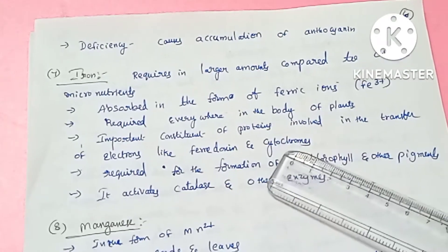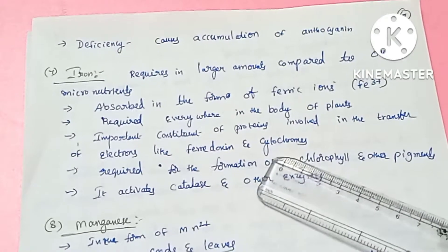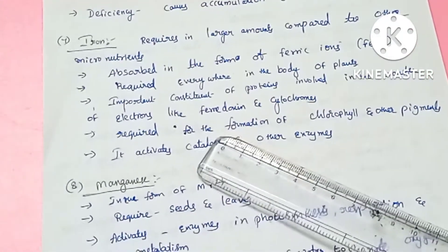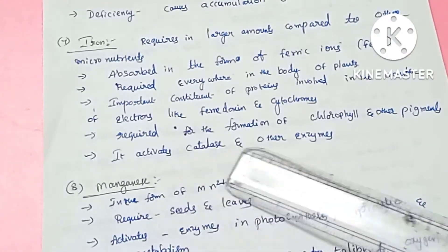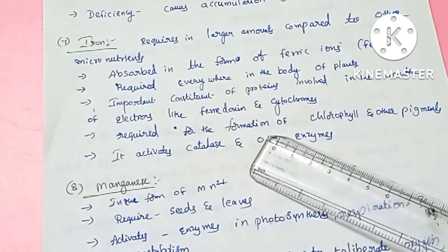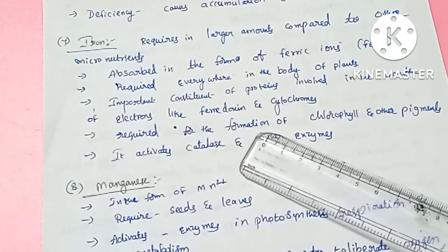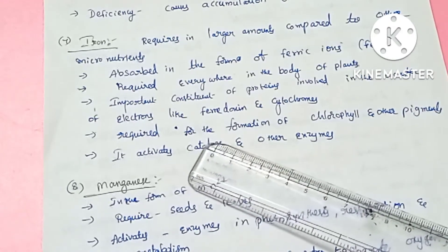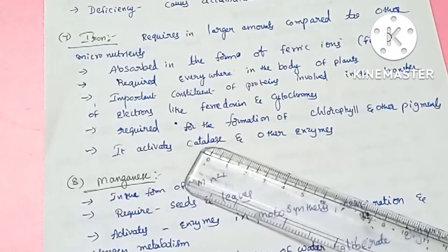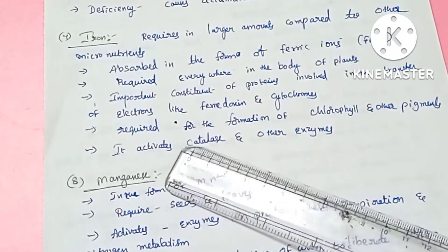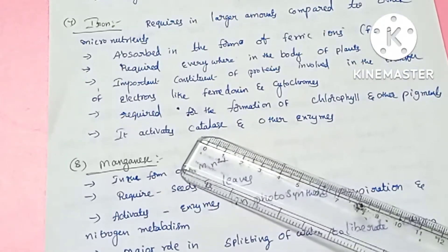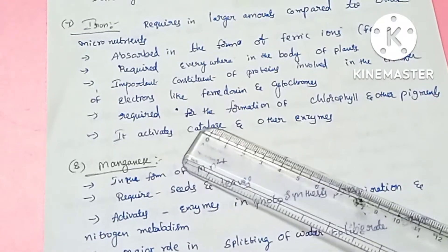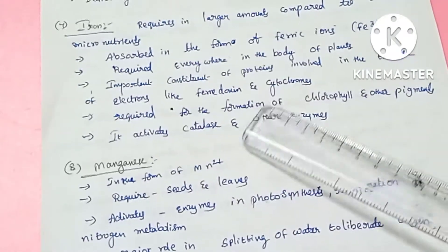Iron is an important constituent in respiration and is required for the formation of chlorophyll. It also activates important enzymes, such as catalase and other enzymes.